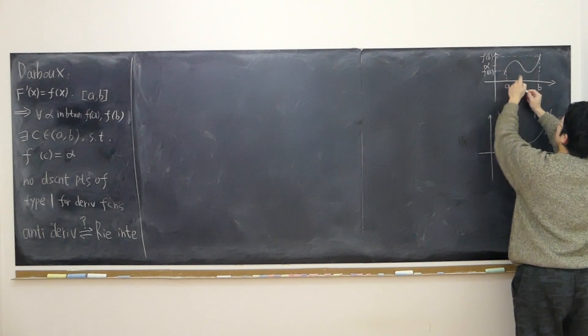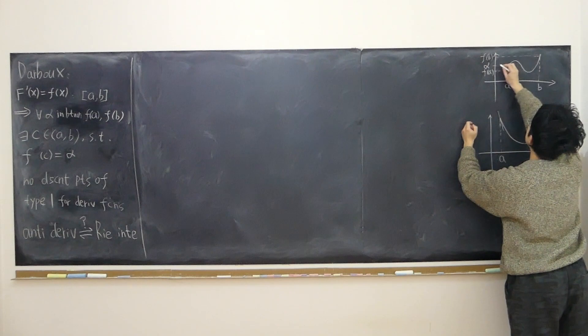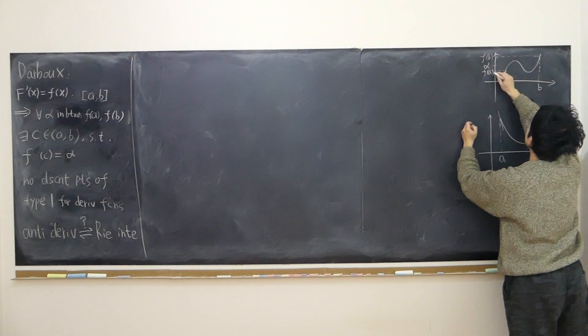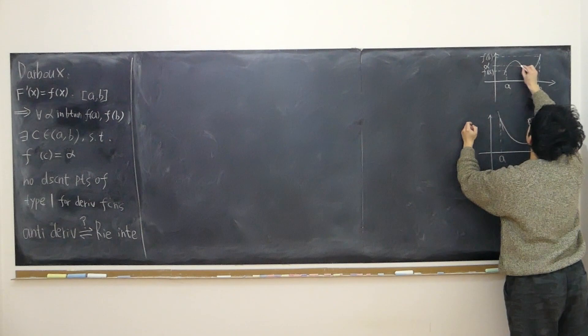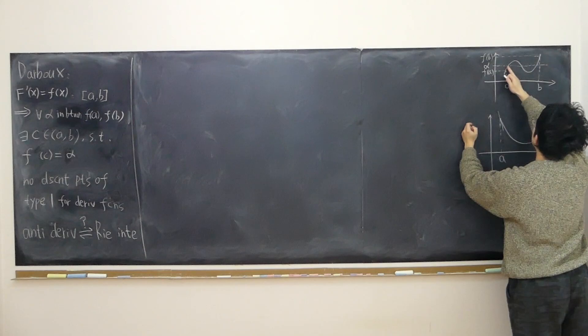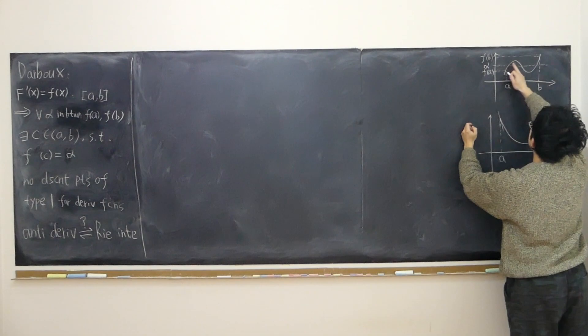Is there some x whose functional value equals alpha? The answer is yes. Graphically, it's intuitively clear. As long as we draw a horizontal line crossing alpha, it's abundantly clear there has to be some x value whose functional value equals alpha, because the function is continuous.